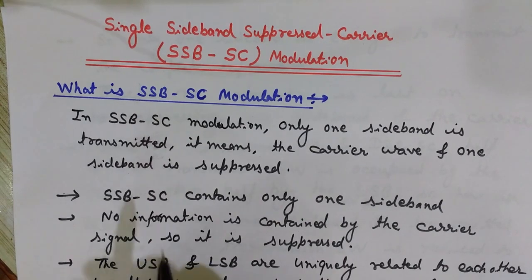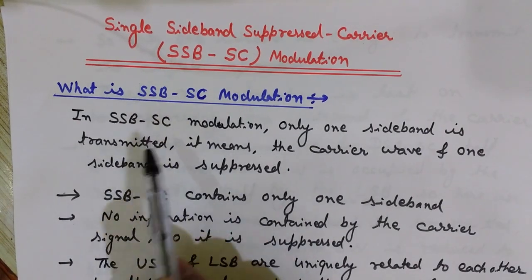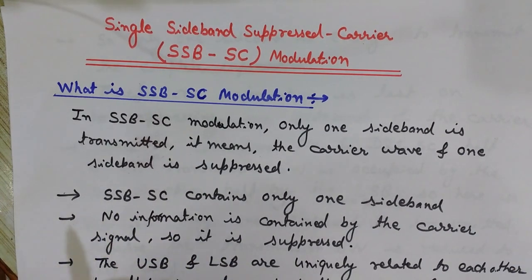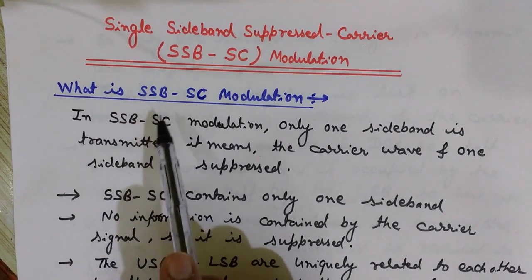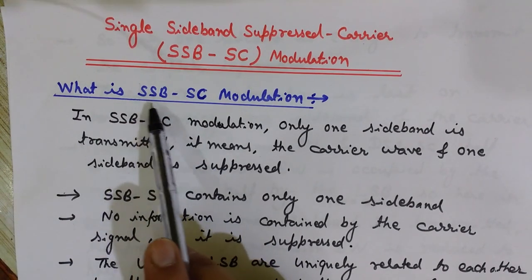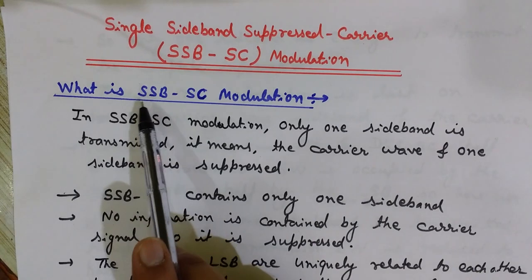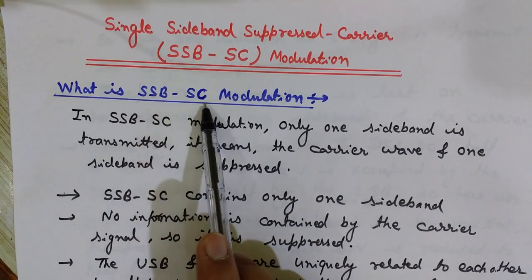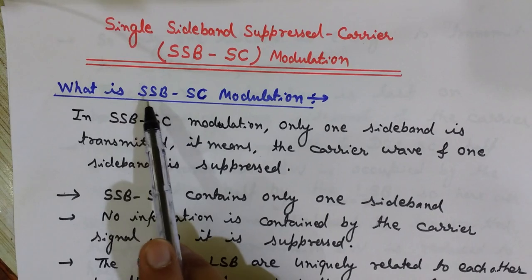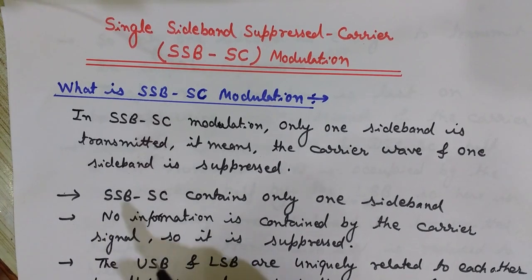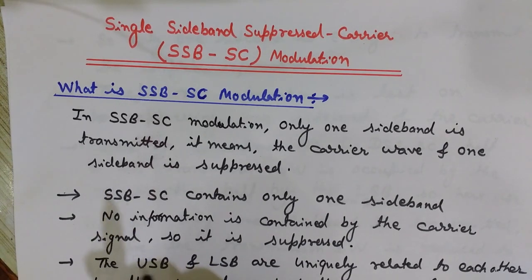In DSB-SC, discussed in the last lecture, we transmitted only two sidebands and suppressed the carrier — only two sidebands are transmitted. In SSB-SC, as the name suggests, it transmits only a single sideband; the carrier and the other sideband are suppressed. Compared to conventional AM, which transmits two sidebands and a carrier, here only one sideband is transmitted.